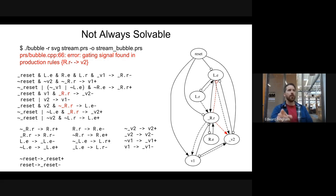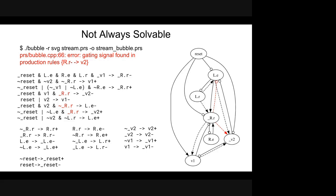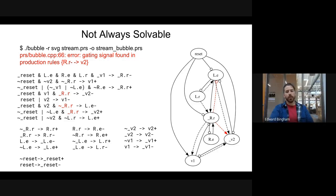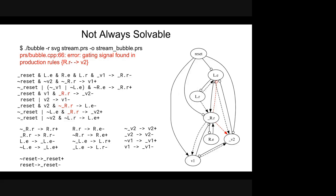If we run bubble on the expansion encoding with state variable insertion that only uses the currently-up and currently-down information, it would still produce a graph, and that graph would be negative-cycle free. You can still have cycles of non-isochronic forks because you're allowed to have inverters on non-isochronic forks, but it will be free of negative cycles. Here's a cycle of non-isochronic forks following the solid lines between reset, underscore rr, and v1 — you're allowed to have an inverter on there.